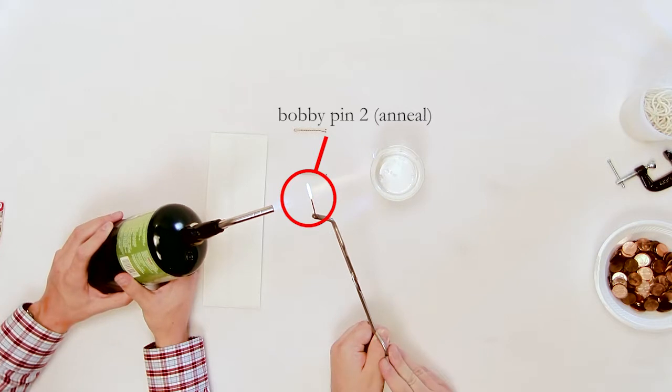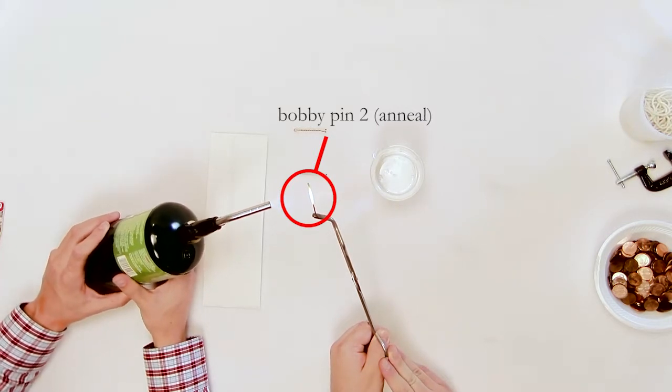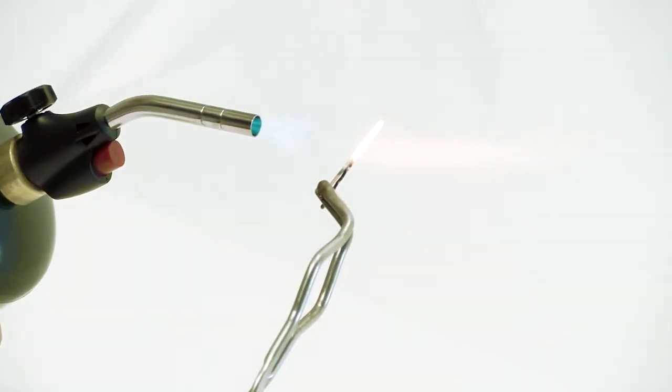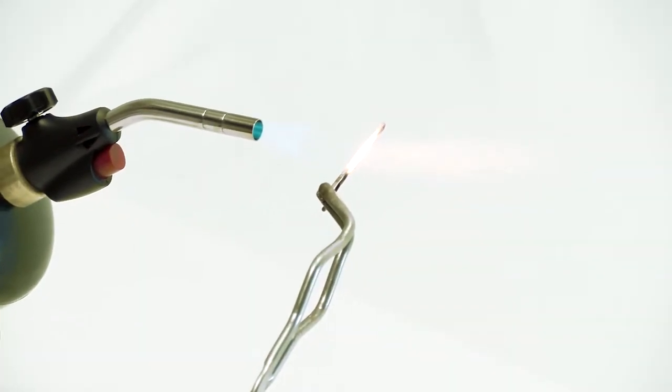Heat a second pin using the Bunsen burner or torch. The entire pin should be heated until the bobby pin glows red hot. Keep the bobby pin in the flame for 20 to 25 seconds after it starts glowing red.